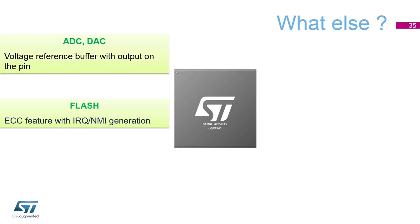Maximum flash speed without wait states depends on supply voltage: it is 16 MHz in range 1 or 6 MHz in range 2. The flash memory, up to 1 MB, is divided into two banks of 512 KB each, with a read-while-write capability.